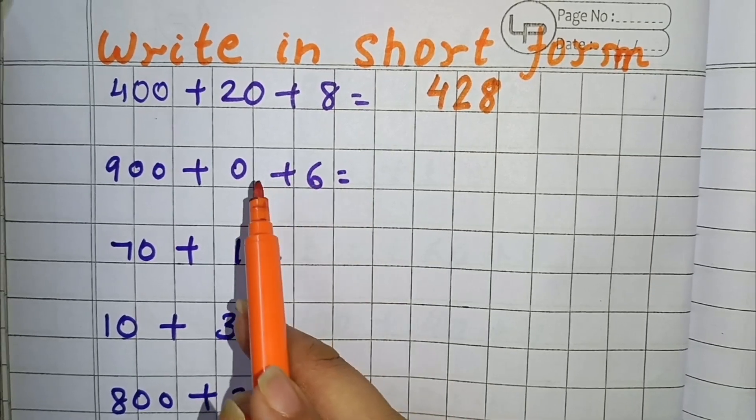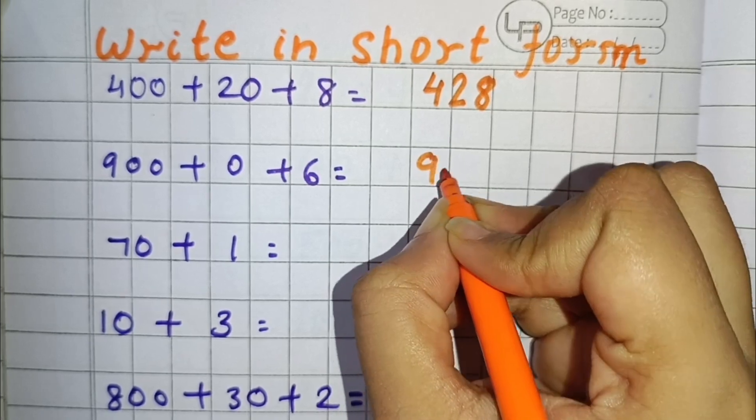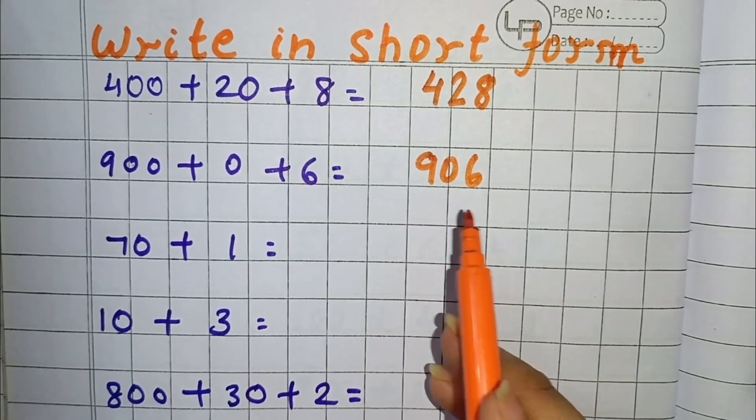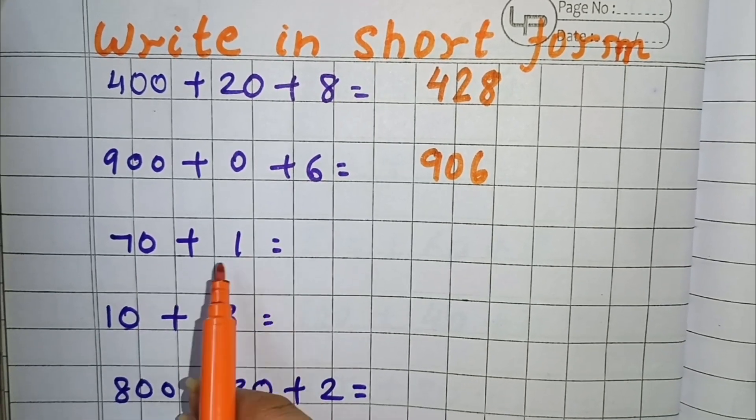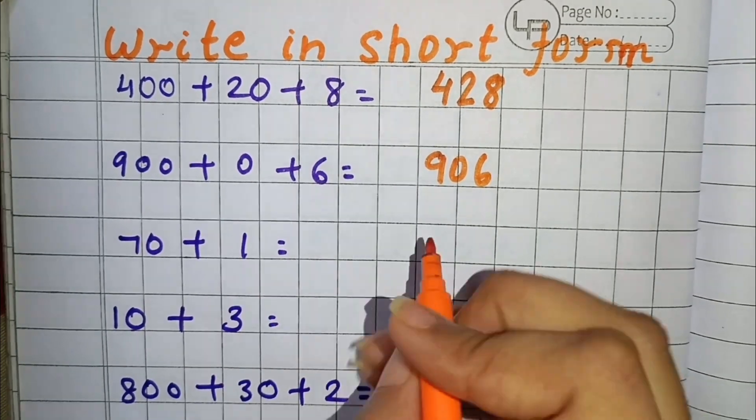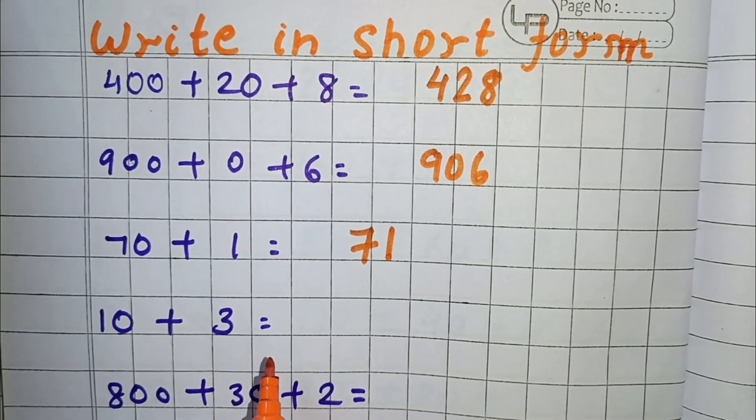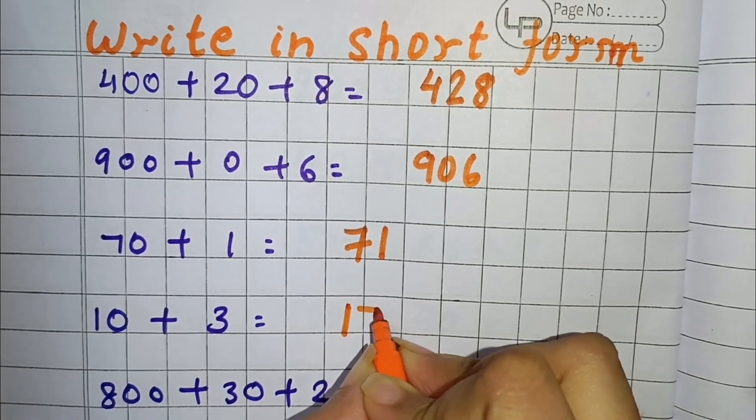Now next we have 900 plus 0 plus 6. You can write this number in short form like 906. Next we have 70 plus 1, which will come as 71. Then 10 plus 3 short form will be 13.